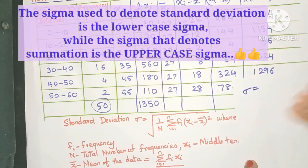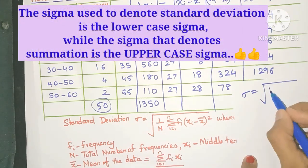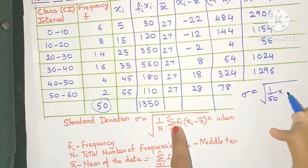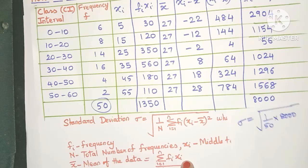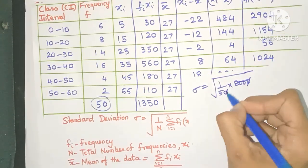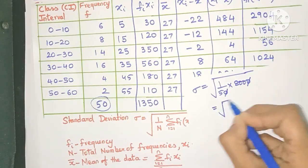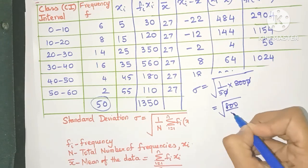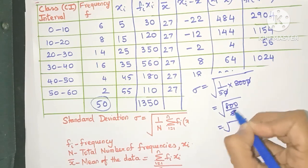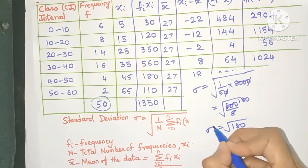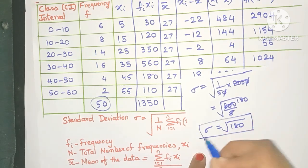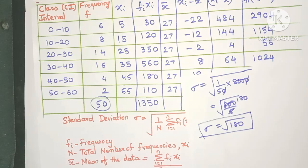So sigma, that is standard deviation, is square root of 1 upon n, that is 1 upon 50, into this whole thing, 8000. So I hope you're clear till here. Now just calculation part is remaining. So I'll get 800 by 5, which is, yes, it will go in the 5s table. Yes, I will get root of 180. Now this is the standard deviation.